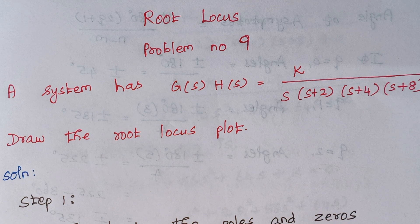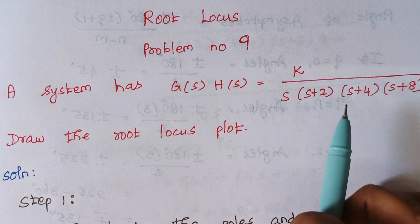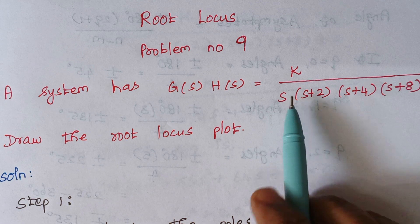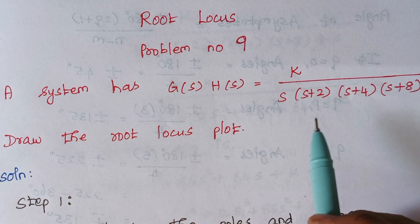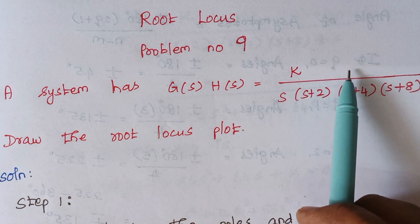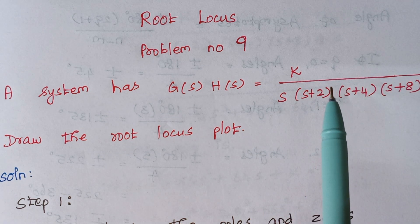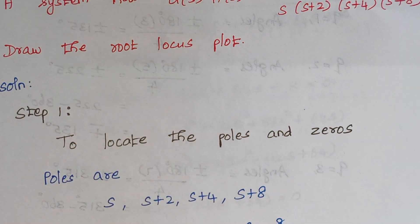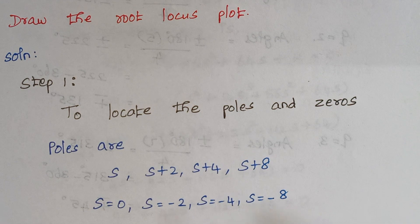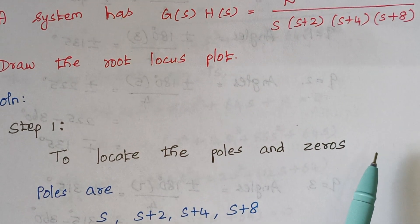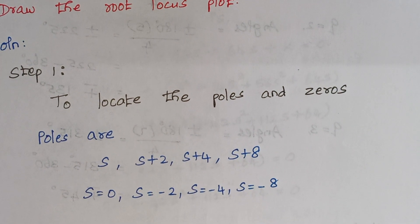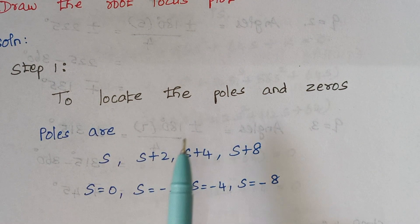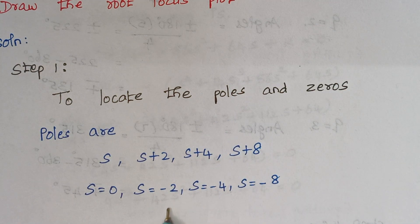Step 1 is to locate the poles and zeros. From the transfer function, you can see there are 1, 2, 3, 4 — totally 4 poles. How many zeros? There is no s term in the numerator part, so there are no zeros. To locate the poles, the values are s, s+2, s+4, and s+8. We equate each term to zero, giving pole values of 0, -2, -4, and -8.